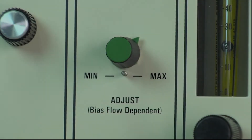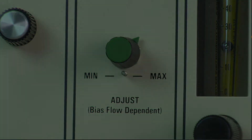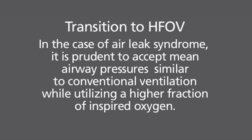Oxygenation is primarily managed by manipulation of the Mean Airway Pressure. Chest x-rays can be effective tools in determining satisfactory inflation pressure. In HFOV, mean airway pressures are usually initiated at 5 to 8 centimeters of water pressure above those used in conventional ventilation. In the case of air leak syndrome, it is prudent to accept mean airway pressures similar to conventional ventilation, while utilizing a higher fraction of inspired oxygen.